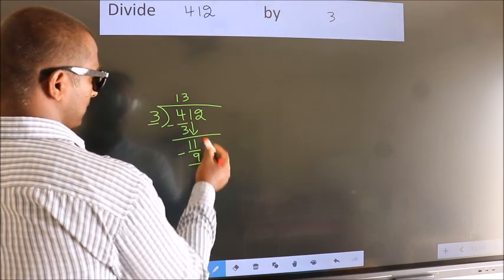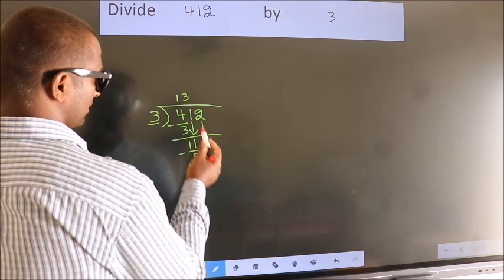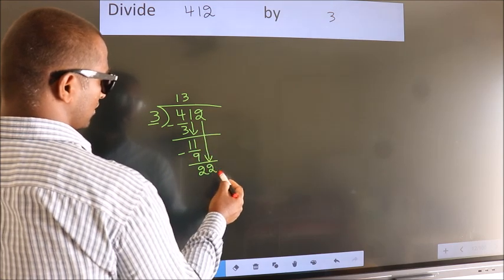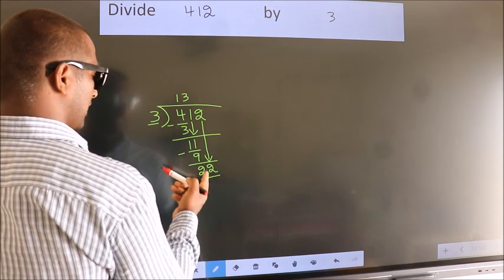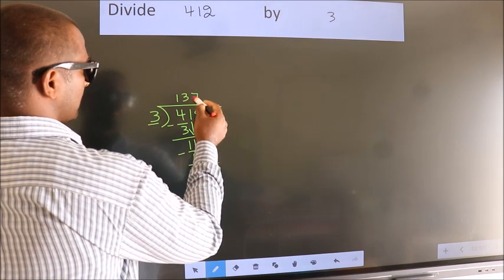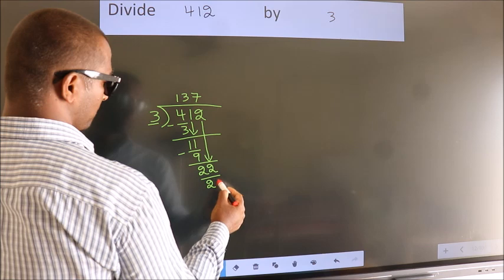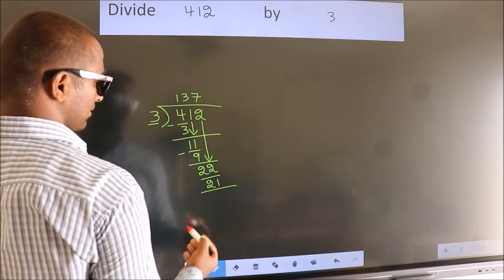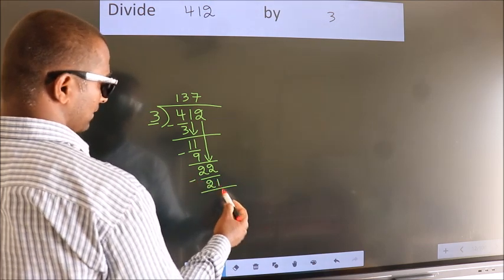After this, bring down the beside number, so 2 down, so 22. A number close to 22 in 3 table is 3 7s 21. Now we subtract, we get 1.